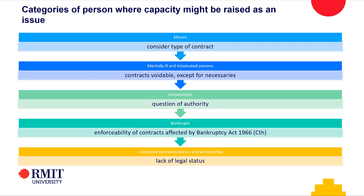Corporations — on the whole, don't get caught up in this. What you need to understand is that corporations are legal people from the day they are incorporated. There are also laws allowing them to enter contracts before incorporation if things are done in particular ways — that's a Corporations Act question. As far as contract law is concerned, a company has capacity to enter into a contract. Questions about corporate capacity are largely around whether the person who signed the contract had authority to do so.